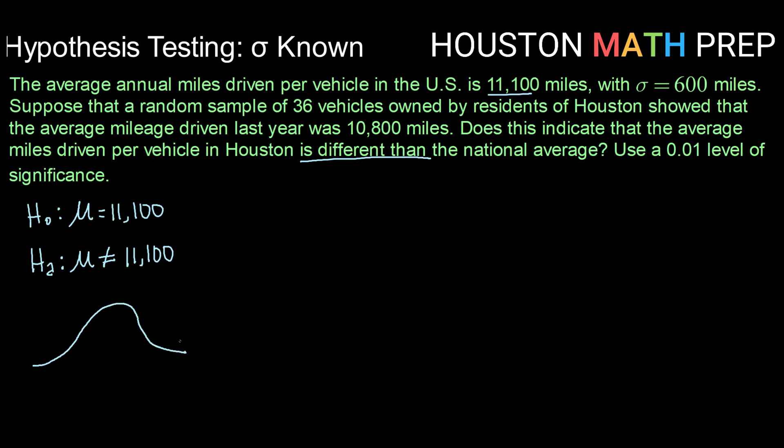So with an alternative hypothesis using not equal to, that means we have a two-sided rejection region here. So that means we're going to have to take our significance level of 0.01 and chop that in half, with half of that area going into the bottom tail and half of that area going into the top tail.